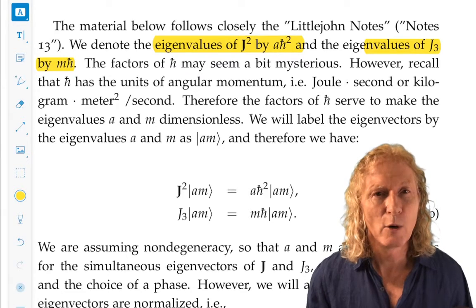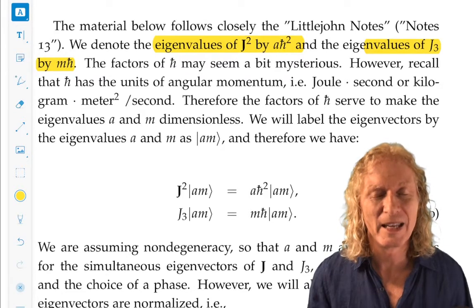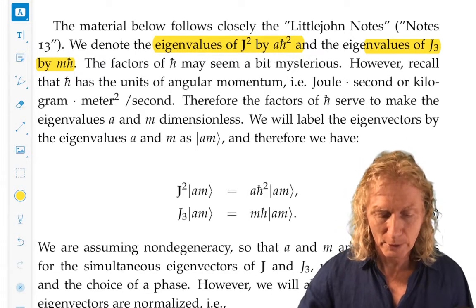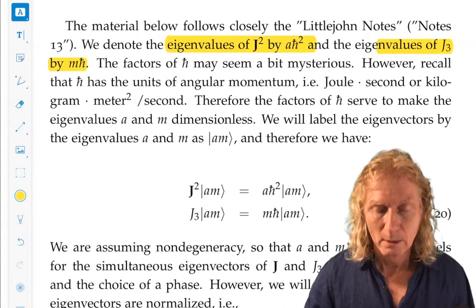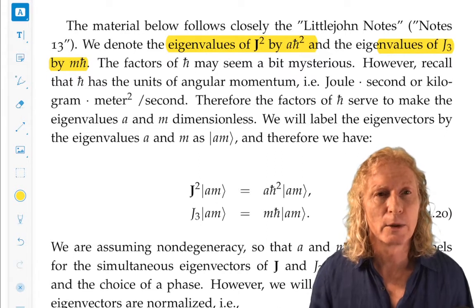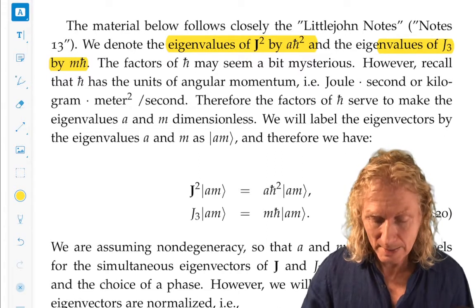It so happens that h bar and j have the same units. So we're going to scale the eigenvalue of j squared by h bar squared and the eigenvalue of j3 by h bar.